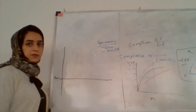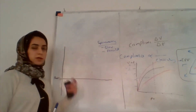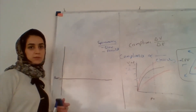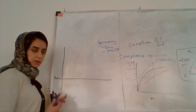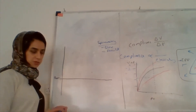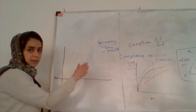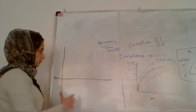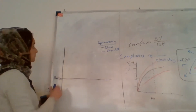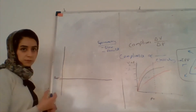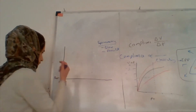In spirometry, we have either slow maneuver or forceful maneuver. First, we will do the slow maneuver for a patient, so let's see what we can see in the spirogram — in the graphs that develop during spirometry.